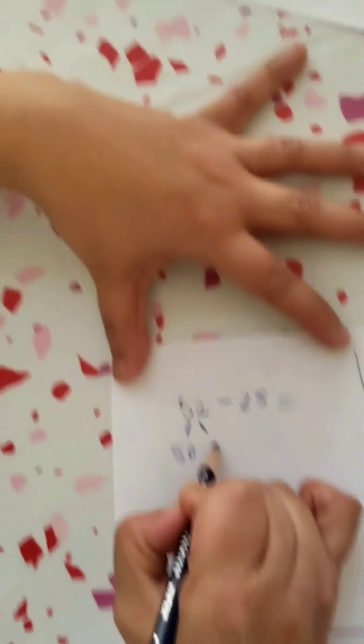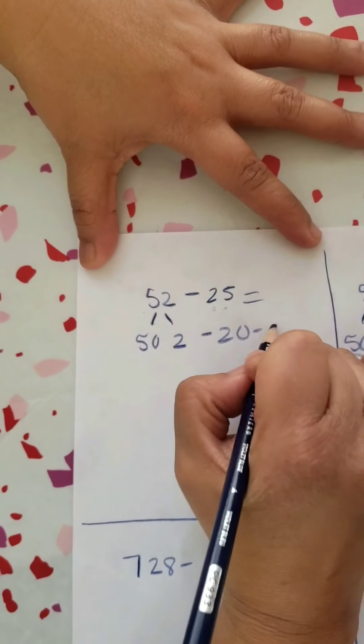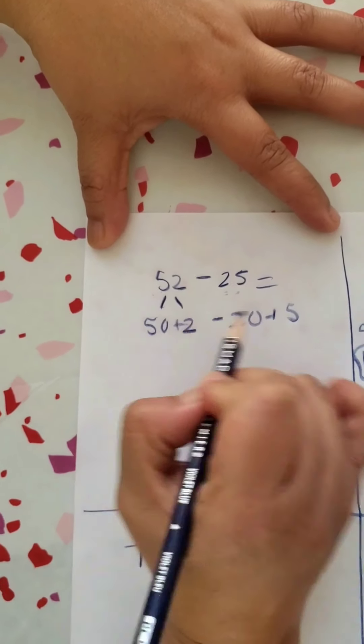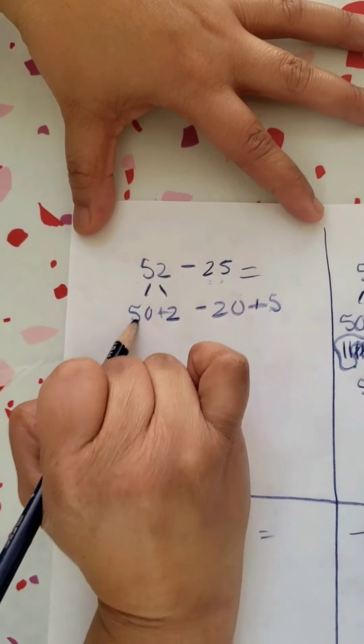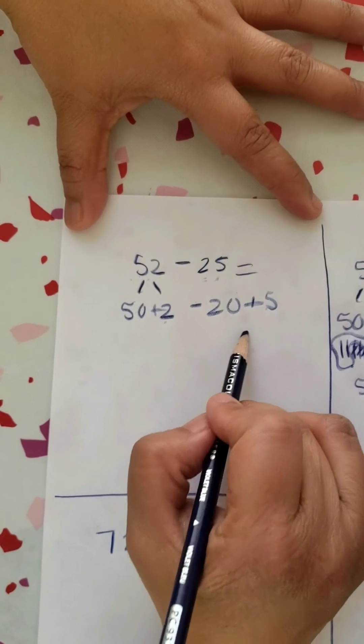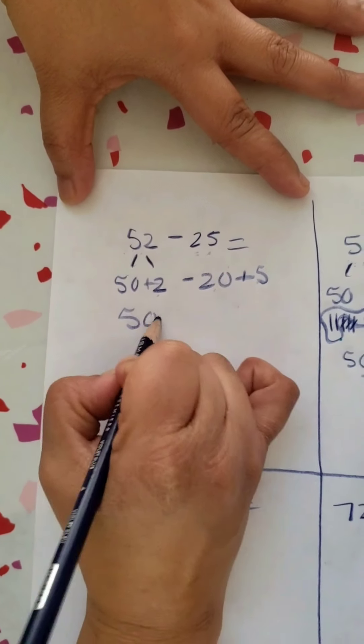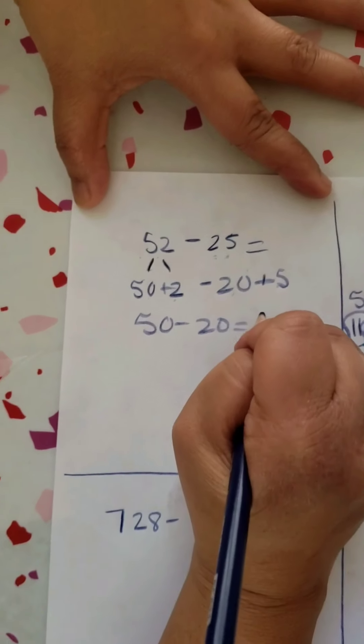So I know that it's 50 and 2, and I know it's 20 and 5. I'm going to put your addition signs because I know that 20 and 5 goes to this number and they stay together, and 50 and 2 goes to this number, they stay together. All I'm doing is looking for their family number and looking for similarities. I know in my tens place I can go 50 minus 20 equals 30.